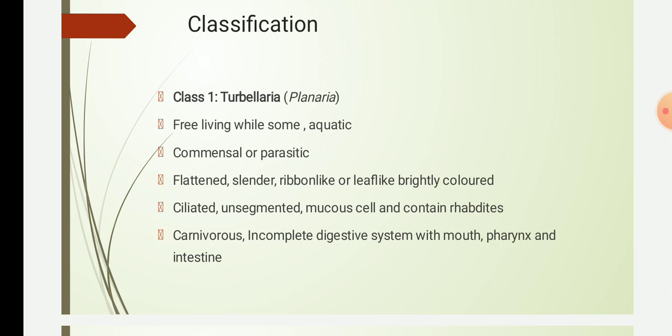They contain rhabdoids, which are chemical-like structures that are discharged into the water. They swell and form a protective mucus sheet around the body and may also release a toxin to subdue prey or escape from predators. This is the function of the rhabdoids — they are secreted by mucus cells, discharged into water, swell to form a protective mucus sheet, and can secrete toxins.